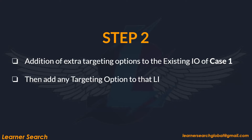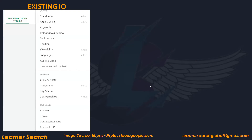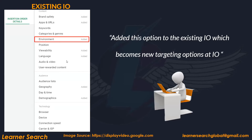Step 2: Addition of extra targeting options to the existing IO from Case 1. What we are doing here is, for the existing IO, we are adding a targeting option to the LI. Environment is added — but instead of at line item level, we are adding it to the IO. This becomes a new targeting option at IO level.